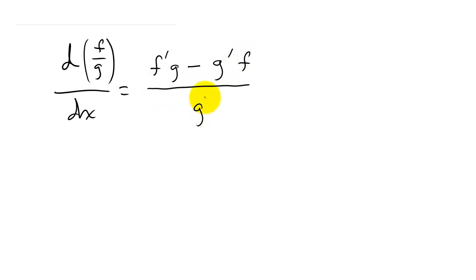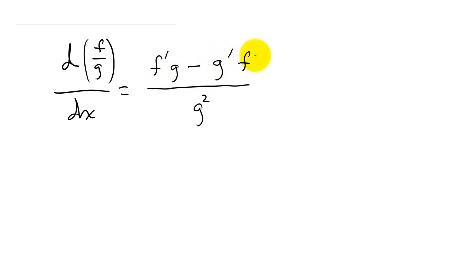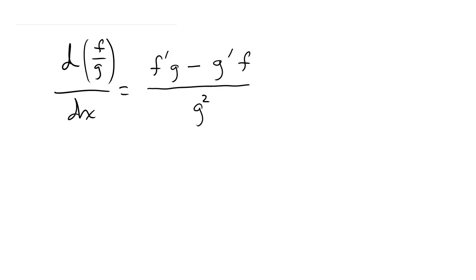and all that over the denominator squared. It's important that you do the derivative of the numerator first, times the denominator, and then minus the derivative of the denominator times the numerator — because if you switch them, your sign will be wrong.